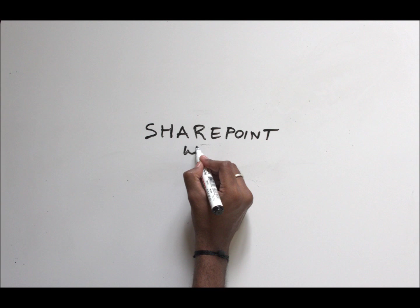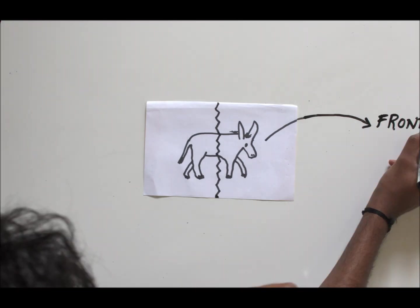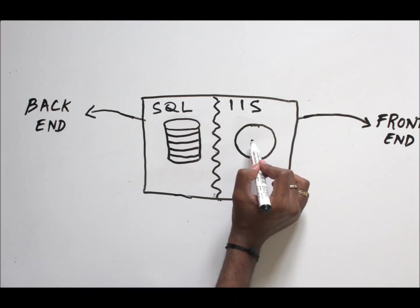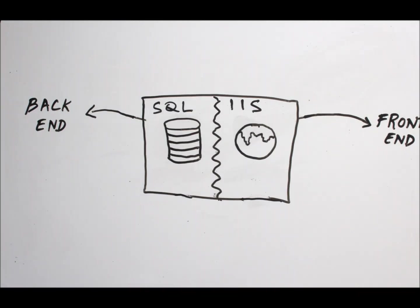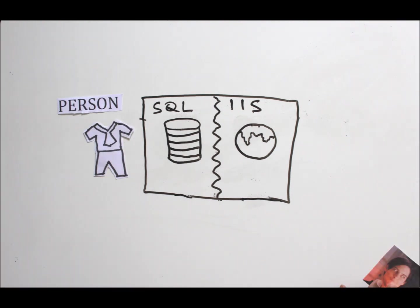Similarly, let's talk about a SharePoint web application. A SharePoint web application has a back-end and a front-end. The back-end is the SQL server and the front-end is the IIS. The SQL server, the back-end, is the person and the front-end IIS is the identity.